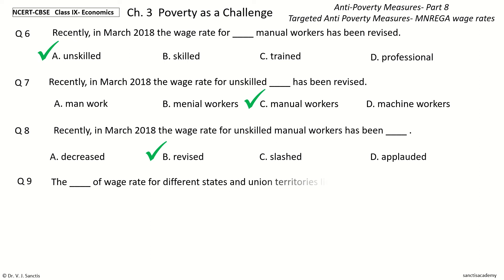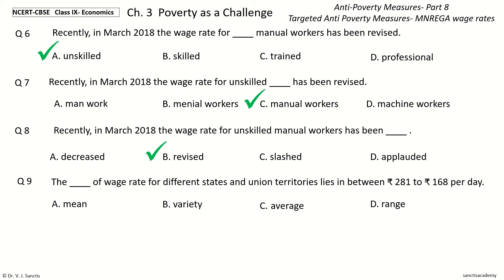Question 9: The Dash of wage rate for different states and union territories lies in between Rs. 281 to Rs. 168 per day. The options are: Mean, Variety, Average, Range. The answer is Range. The Range of wage rate for different states and union territories lies in between Rs. 281 to Rs. 168 per day.